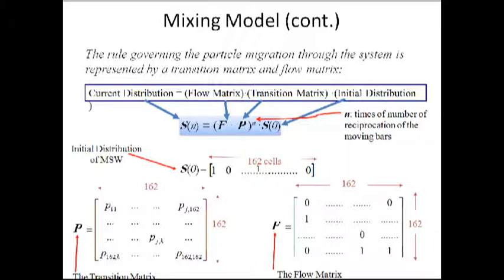This is the equation for calculating the stochastic model. SN is current distribution, F is flow matrix, P is transition matrix, S0 is initial distribution, and N is number of reciprocation of the moving bars.